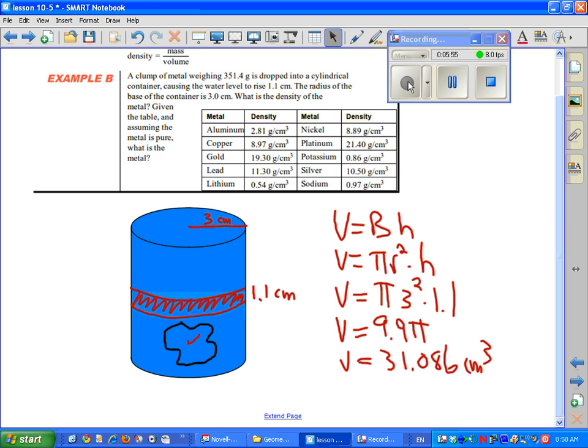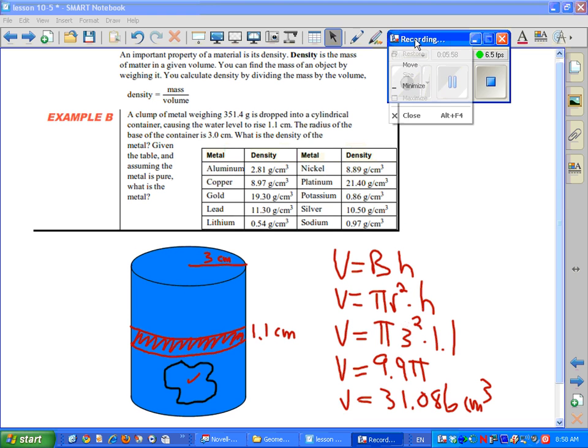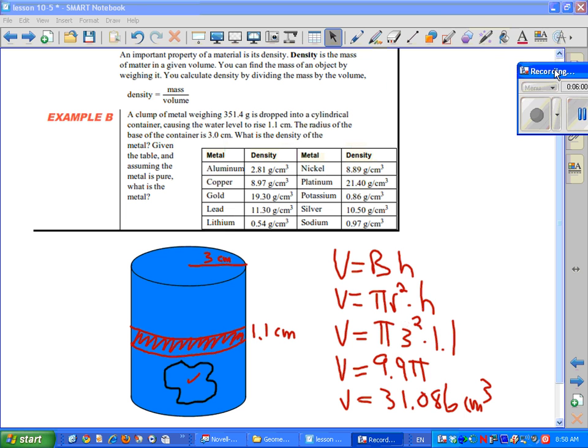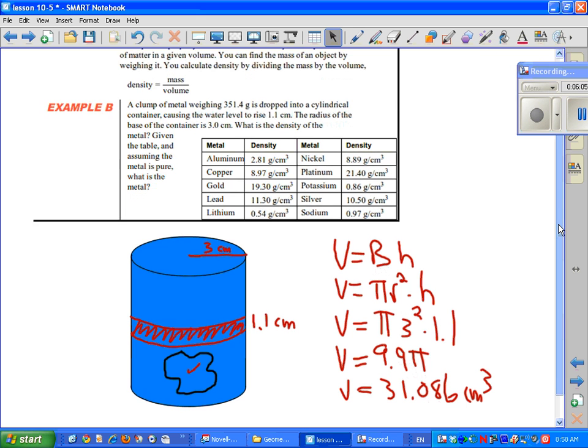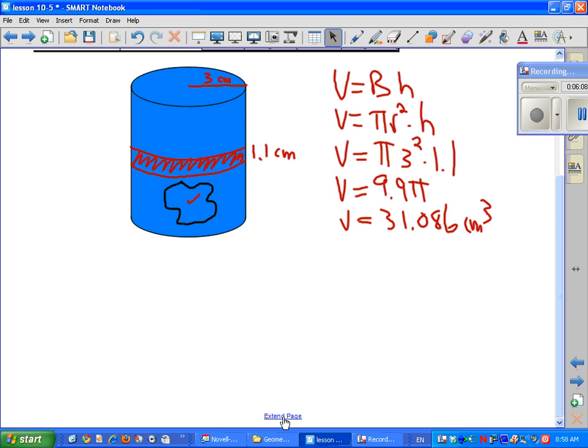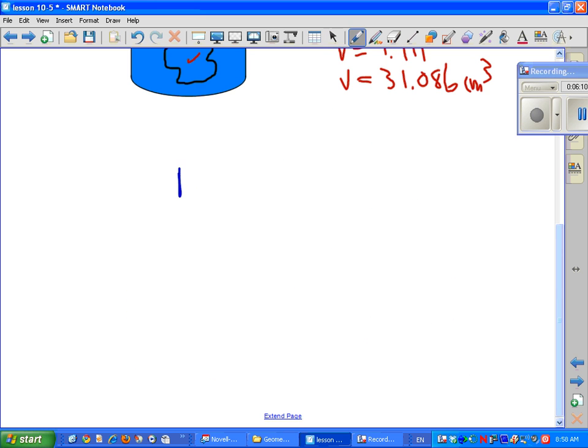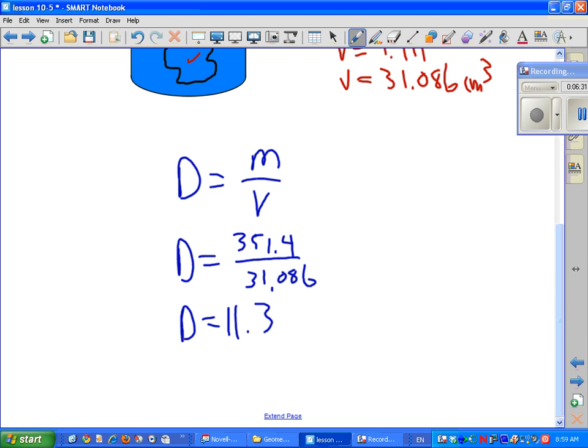And so we need to follow our formula for density here. And so we take the mass and we divide by the volume. So in this case the mass is 351.4. So let's just write that in here. Density equals mass over volume. So density equals 351.4 divided by 31.086. I've got a calculator in my hand here and let's just try that out.